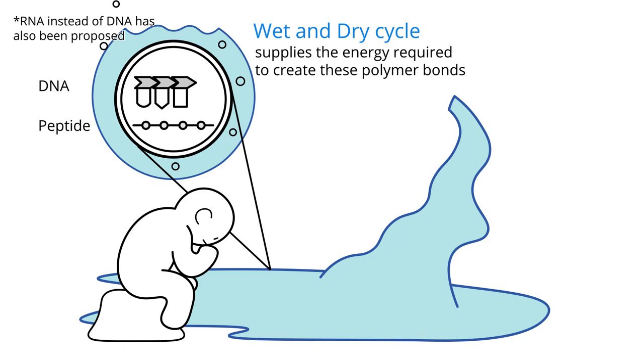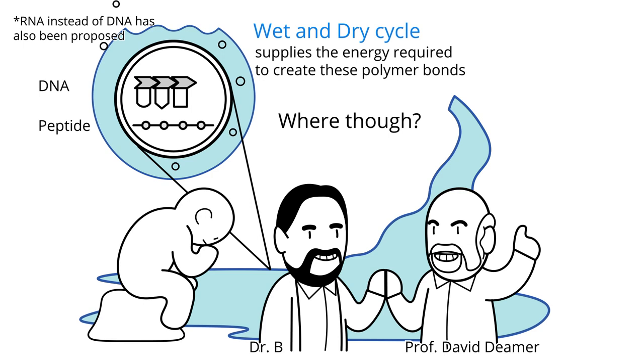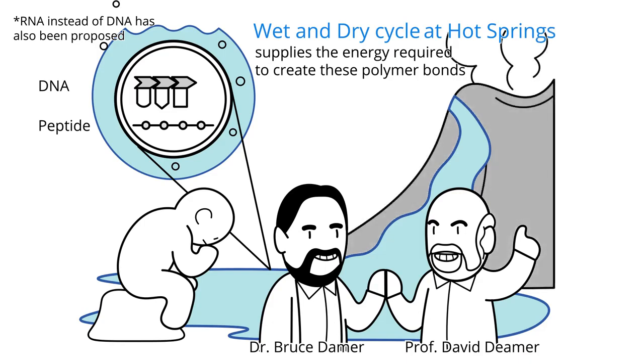The question though is where on Earth can we get naturally occurring wet and dry cycles to happen? This is where researchers Professor Dave Diemer and Dr. Bruce Diemer from the University of California at Santa Cruz proposed that hot springs, prevalent on Earth some four billion years ago during what's known as the Hedean Eon, is where the earliest forms of life developed.